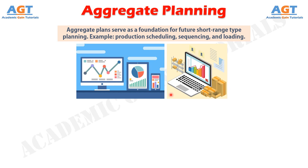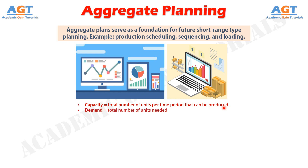Steps taken to produce an aggregate plan begin with the determination of demand and the determination of current capacity. Capacity is expressed as total number of units per time period that can be produced. This requires that an average number of units be computed since the total may include a product mix utilizing distinctly different production times. Demand is expressed as total number of units needed. If the two are not in balance — equal — the firm must decide whether to increase or decrease capacity to meet demand, or increase or decrease demand to meet capacity. In order to accomplish this, a number of options are available.